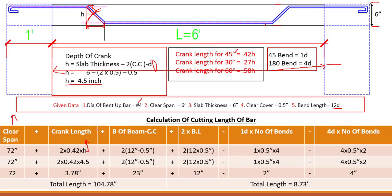The full formula for cut length of a crank bar is: clear span + crank length (2 × 0.42 × H for 45°) + 2 × (breadth of beam − concrete cover) + 2 × bend length − (1D × number of 45° bends) − (4D × number of 180° bends). We have 4 bends at 45 degrees and 2 bends at 180 degrees, so we subtract 1D × 4 and 4D × 2 respectively.